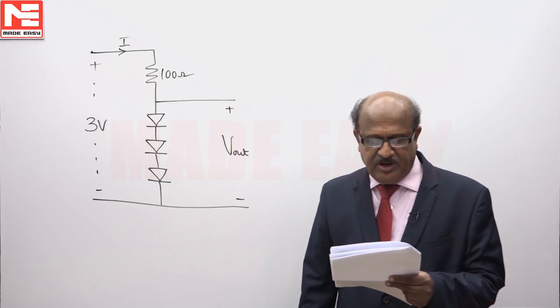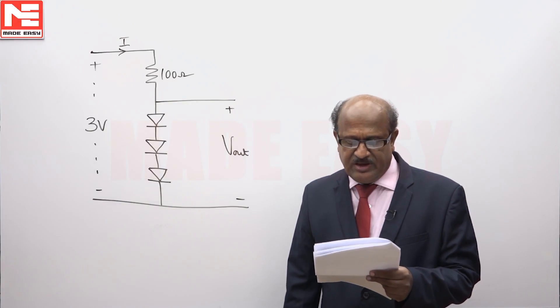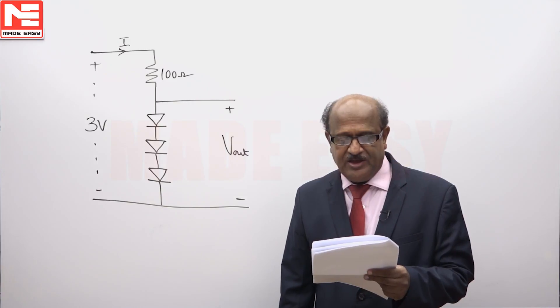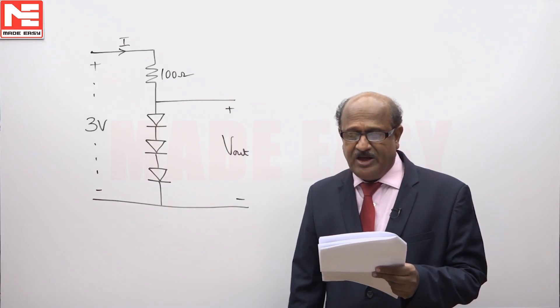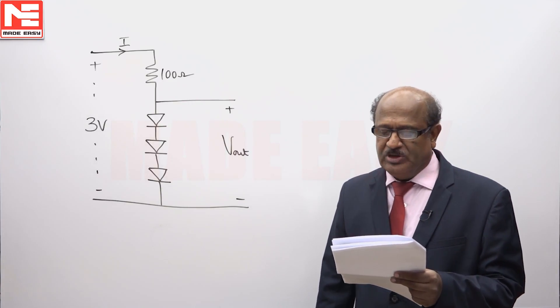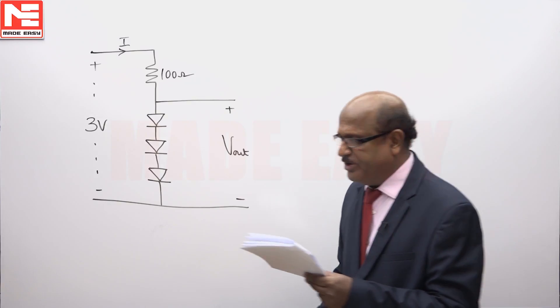For the circuit given, find the value of reverse saturation current I_s for the identical diodes so that output voltage is 2.4 volts.